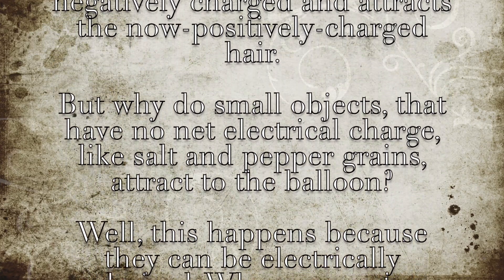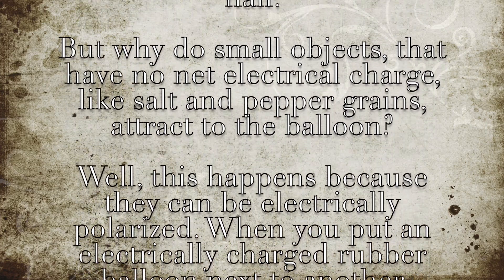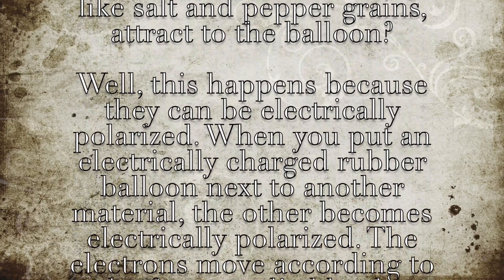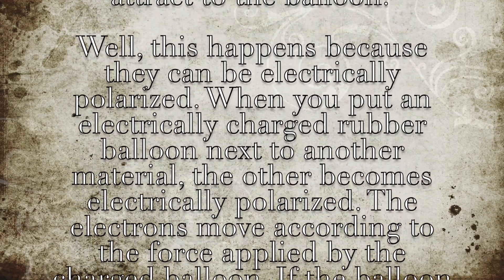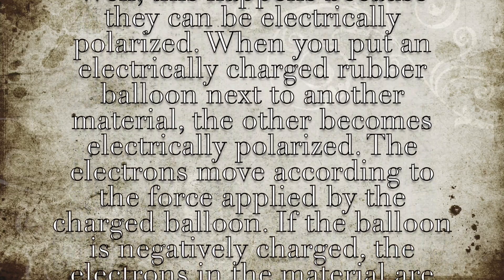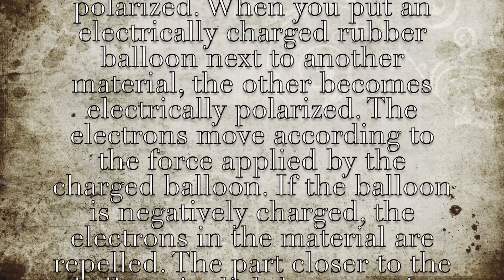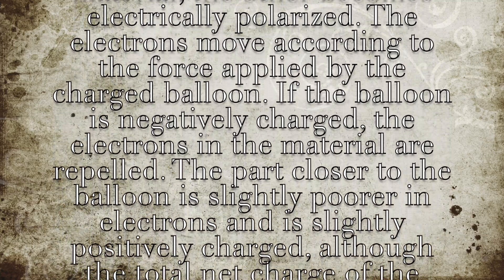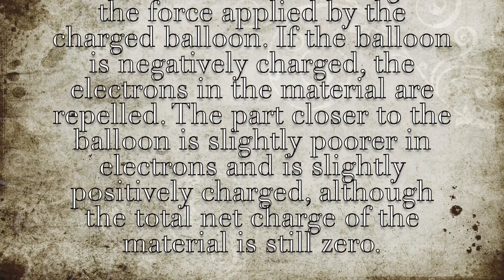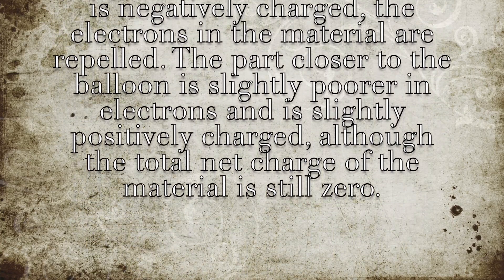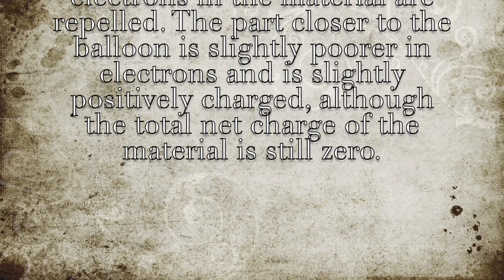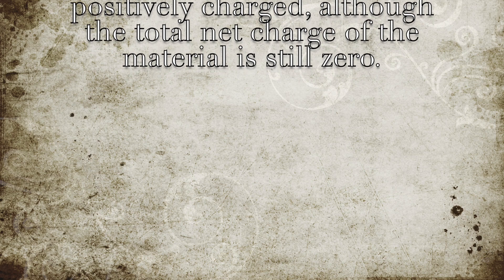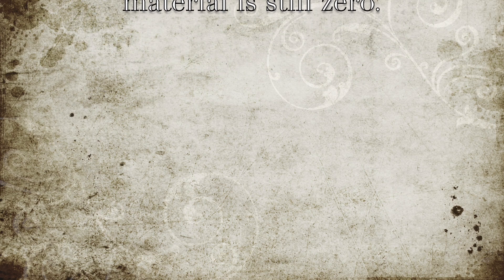But why do small objects that have no net electrical charge, like salt and pepper grains, attract to the balloon? This happens because they can be electrically polarized. When you put an electrically charged rubber balloon next to another material, the other becomes electrically polarized. The electrons move according to the force applied by the charged balloon. If the balloon is negatively charged, the electrons in the material are repelled. The part closer to the balloon is slightly poorer in electrons and slightly positively charged, although the total net charge of the material is still zero.